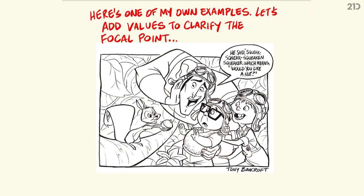Here's my illustration — it's a kind of hodgepodge of Kronk from Emperor's New Groove with the characters from Up. Here's one of my own examples. Let's add values to this to clarify the focal point, because right now all these lines are blending into each other. Our eye goes to the darker big eyebrows of him, and probably to the dark blacks in the glasses of this little guy here. But we really want this to be our focal point — the acorn. That should be what I designed this to be. There's a lot of directional lines that lead to the acorn, but this desperately needs some tones and shadows to really get contrast of light and shadow to make this pop.